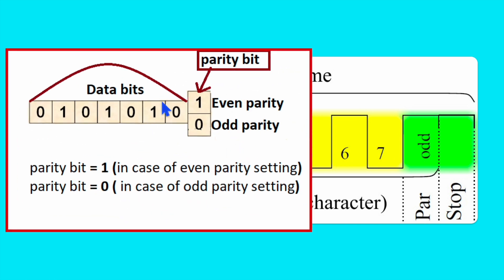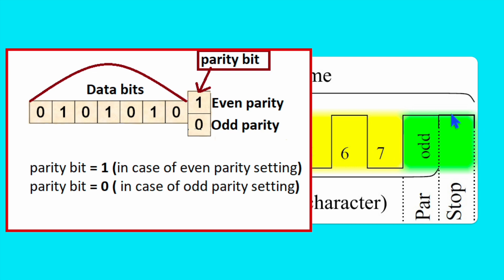Even parity means the number of ones will be even. For example, if three ones were present, you add one extra one to make it four ones. For odd parity, the number of ones must be odd — so if it is already three, we write zero. After the data bits and optional parity bit, a stop bit is sent to end the frame. The stop bit can be one or two bits and must always be logic high.